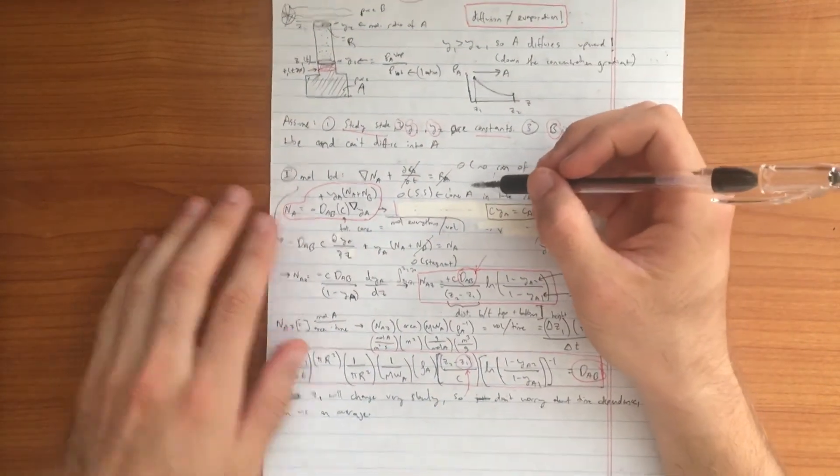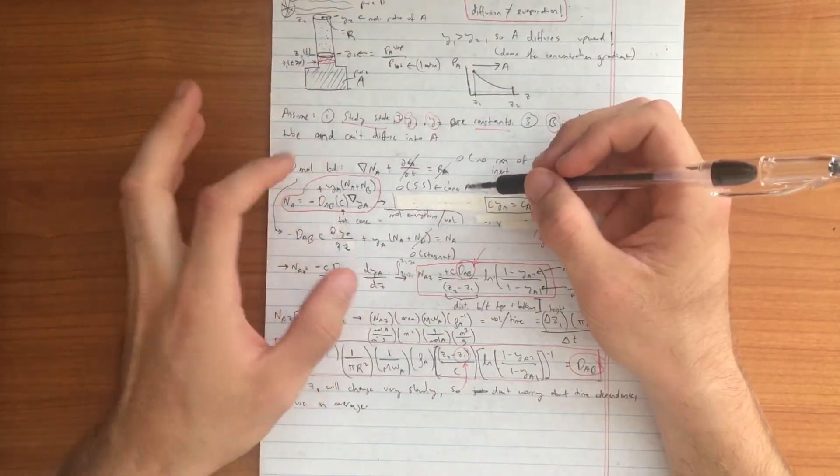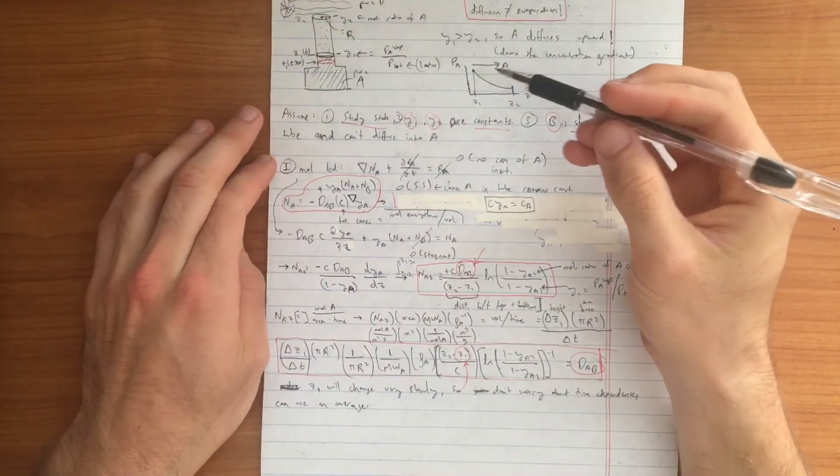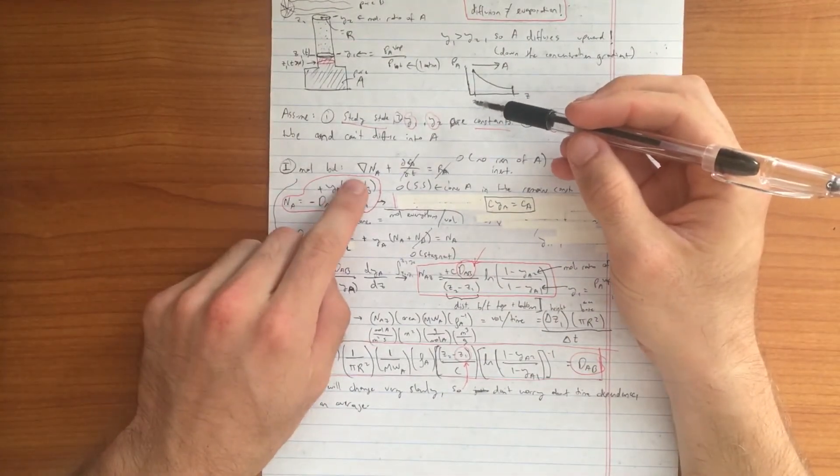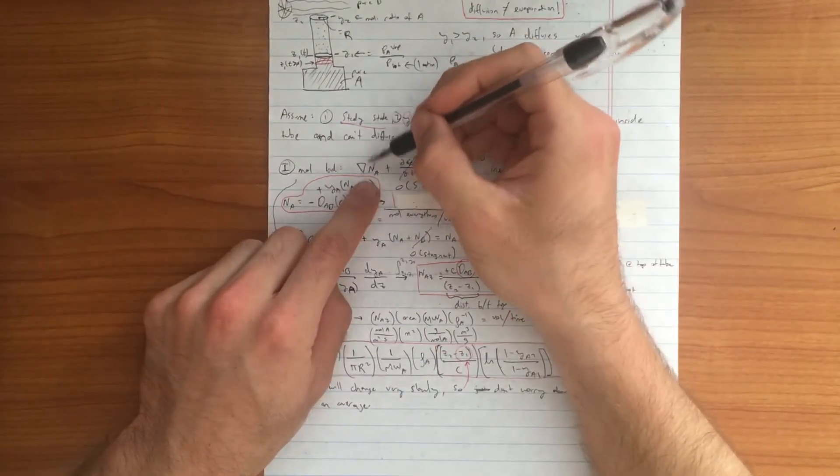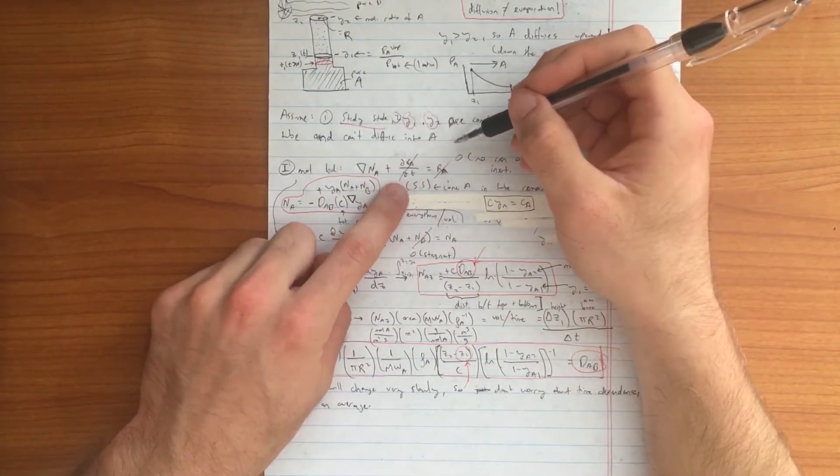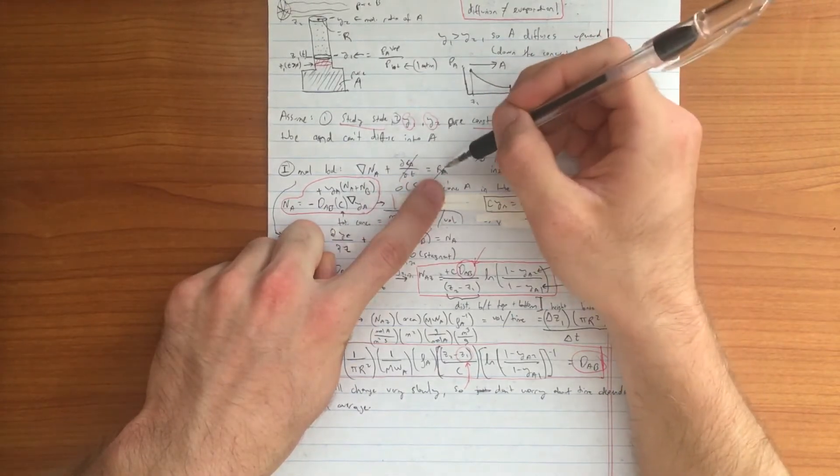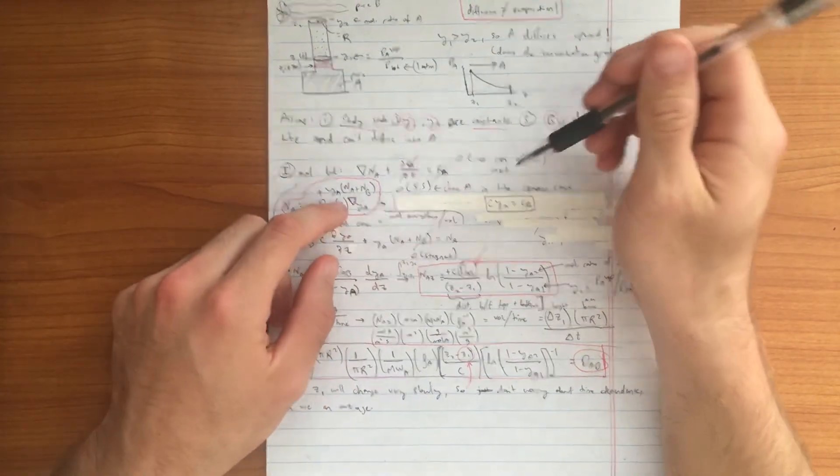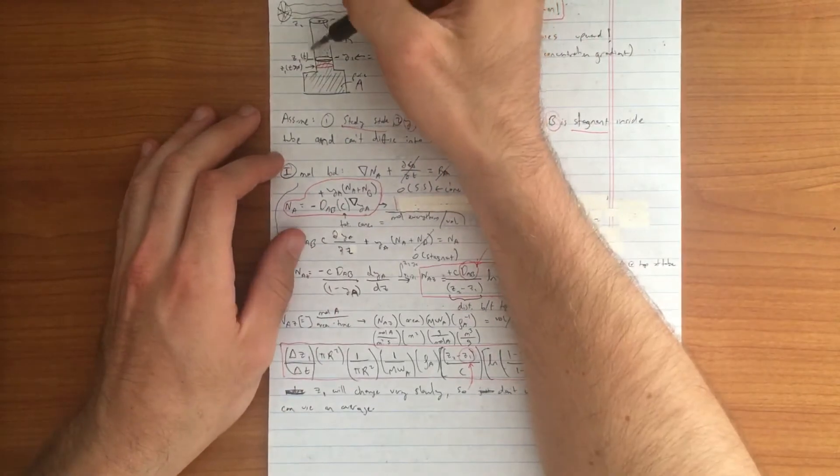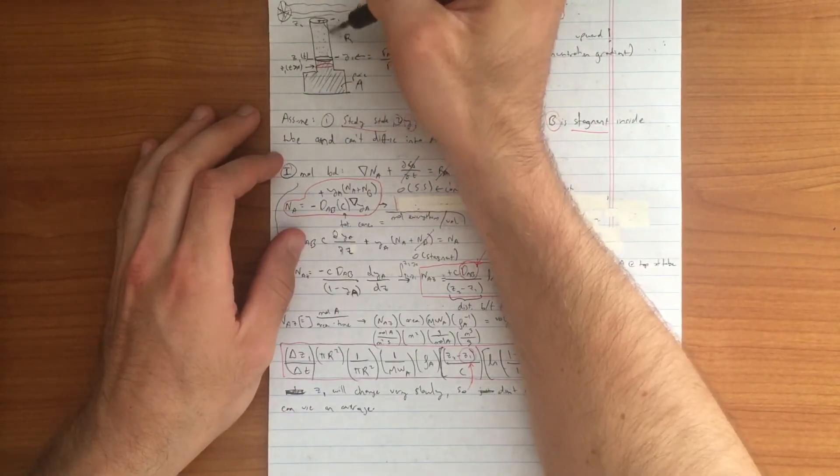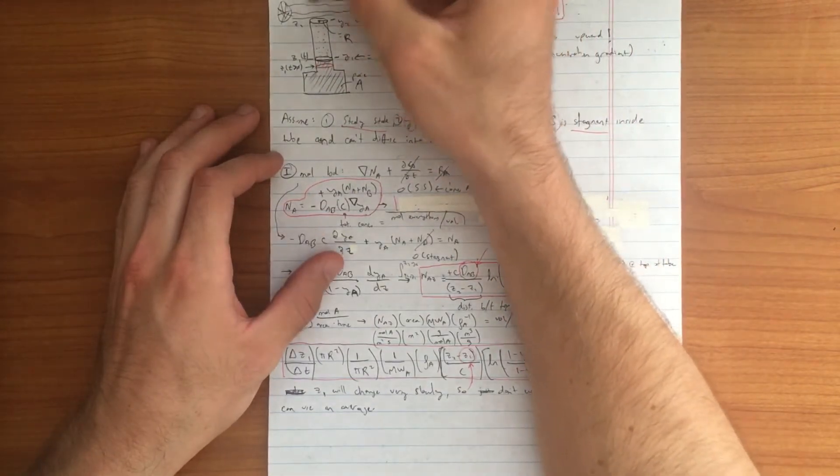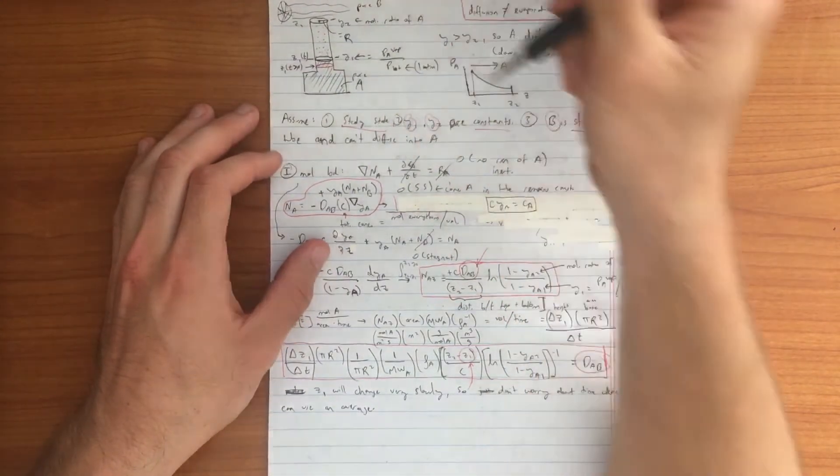Getting into our mole balance, the generic mole balance we can always make in mass transfer problems and almost any problem in chemical engineering is that the gradient of the flux which is called NA plus dCA/dt is equal to RA, the rate of reaction of A. This is all within our control volume. Our control volume in this case is only the inside of the Arnold cell. We're not interested in outside or this pure liquid A here.